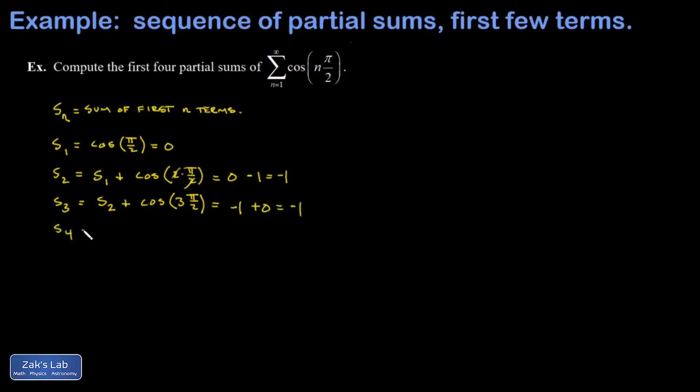Then I move on to the fourth partial sum. That'll be whatever the sum of the first three terms is plus the fourth term. Well, the sum of the first three terms was negative one, and the cosine of four pi over two, that's the cosine of two pi, that's one, and I get back to zero.